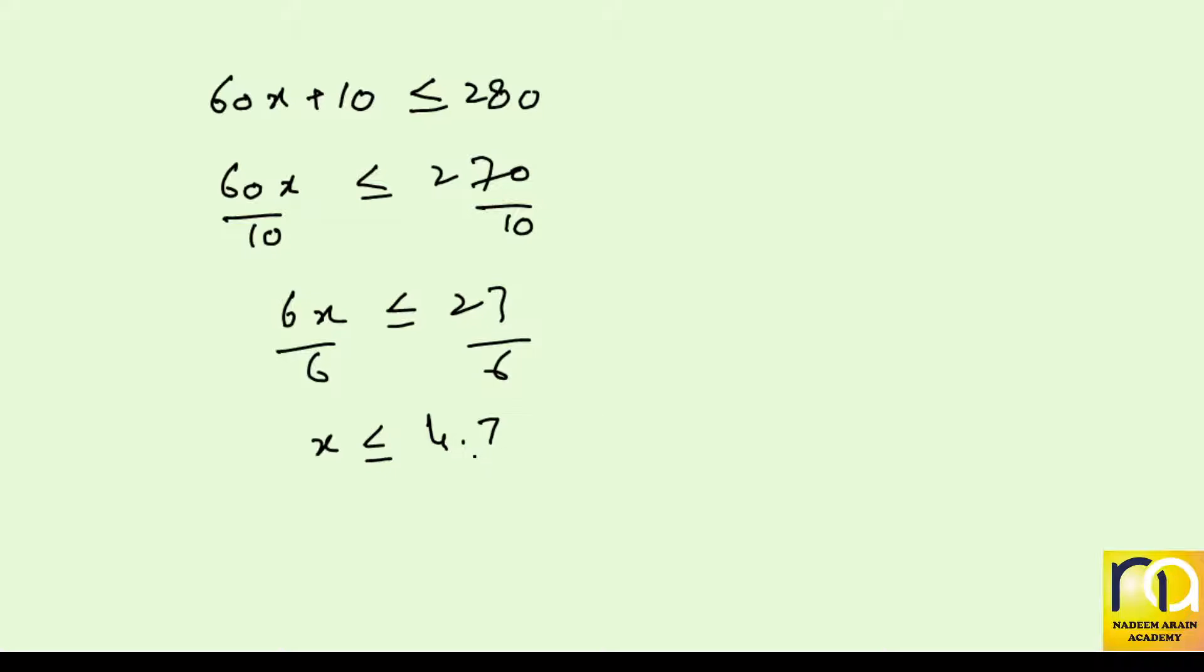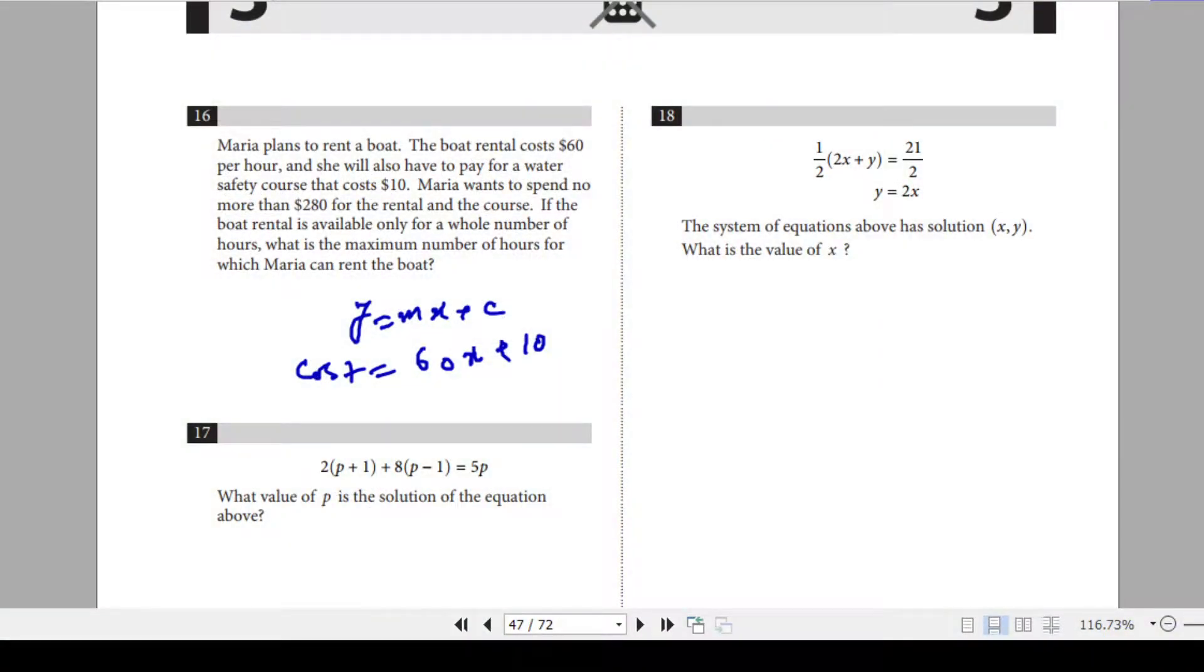But you cannot rent for 4.5 hours. Either you can rent for 5 hours or you can rent for 4 hours. So it should stay less than 4.5. It means you can rent for only 4 hours. This is the number of hours you can rent for. So the answer to this question is 4. You have to write the answer 4. That is the answer.